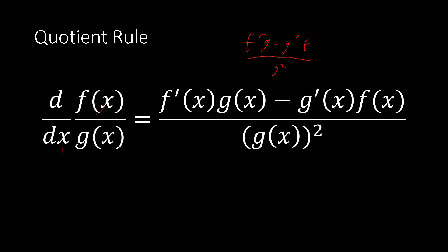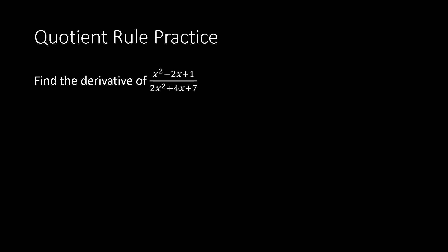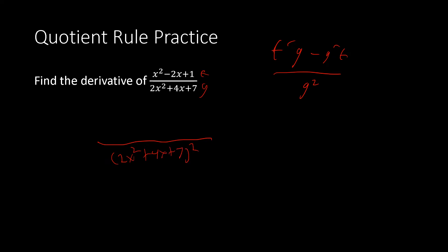Anytime we have a quotient of two functions, we use this rule: f'g − g'f over g². I'll write it in the corner again. For our first example, f is x² − 2x + 1 and g is 2x² + 4x + 7. Note that I won't be multiplying everything out — we'll leave answers in parentheses, which is common practice. First, let's put g² in the denominator: (2x² + 4x + 7)².